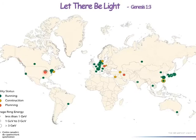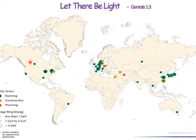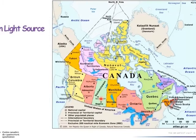This map shows synchrotron facilities worldwide — the blue, green, yellow, and red dots. Some are newer, more advanced generation facilities; some are older. There are many in Europe and in East Asia. In North America there are a few. Africa does not yet have one, but there is currently an effort to build one there.